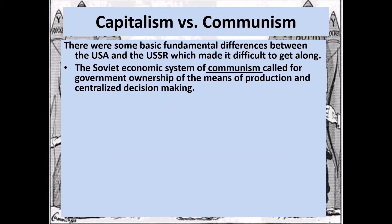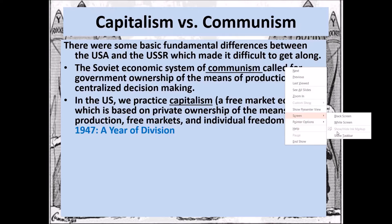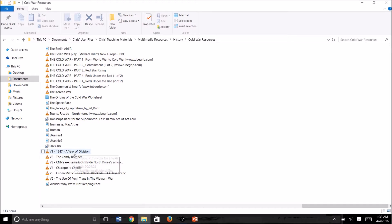Communism is different because the government can control everything. In the U.S. we don't practice communism — we practice capitalism, which is the use of a free market economy based on private ownership of the means of production, free markets, and individual freedom. To emphasize this point, we're going to watch a little video called '1947: The Year of Division,' which shows the differences between capitalism and communism.